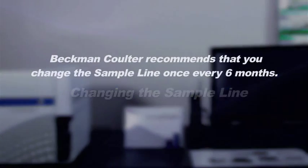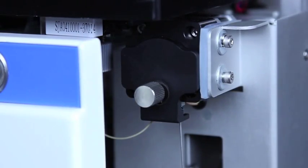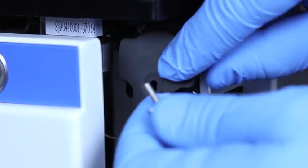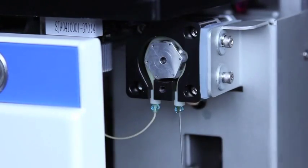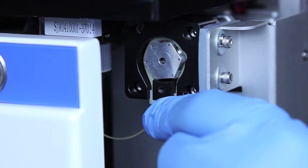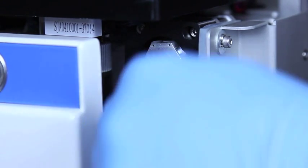Beckman-Coulter recommends that you change the sample line once every six months. To remove the old sample tubing, first remove the thumb screws that hold the sample peristaltic pump cover. To replace the sample tubing, simply remove the tubing by pulling the stoppers and the tubing out of the peristaltic pump and disconnect the sample line.